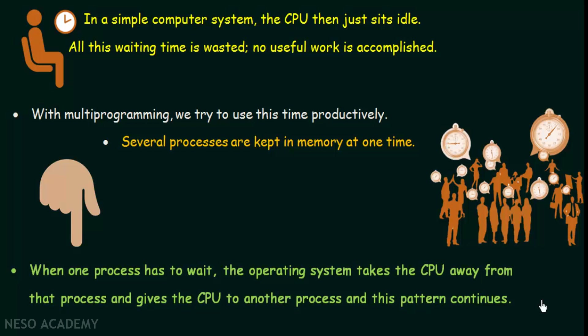There is not just one CPU scheduling rule but many rules, and depending upon the situation we may use one of these. These are the different algorithms of CPU scheduling. Different algorithms will have different ways of assigning the CPU to different processes at different times. We will be studying those algorithms one by one and see how CPU scheduling happens in each.